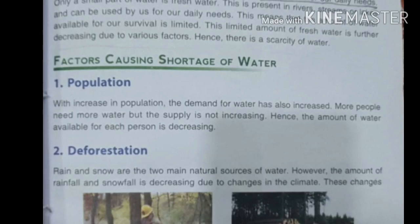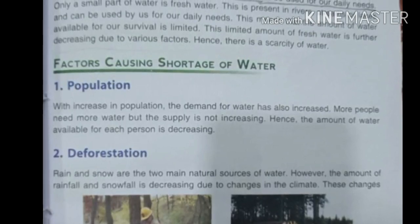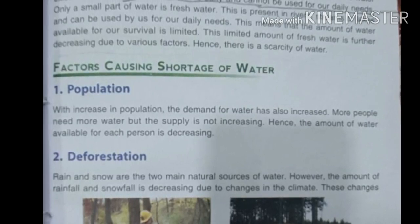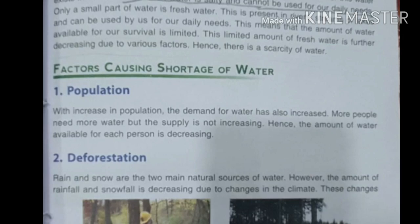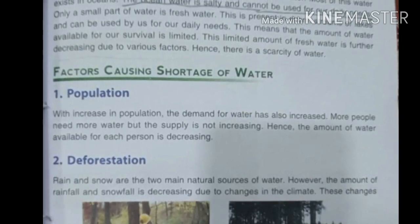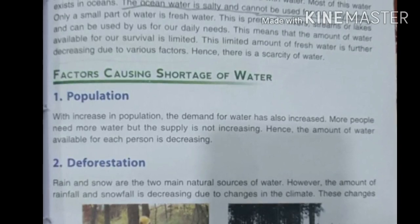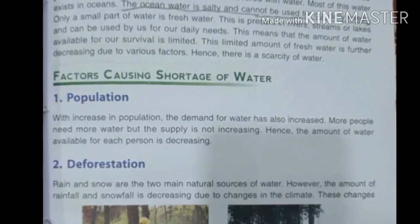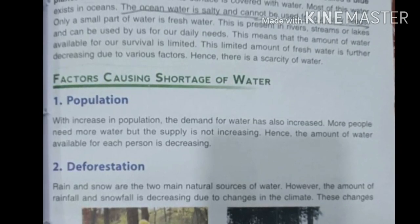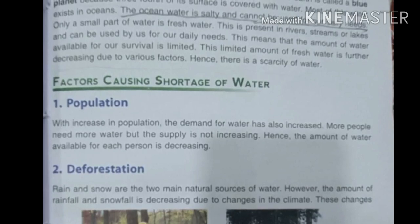Each and every person roughly needs around 700 to 800 liters of water every day. So if our population is increasing day by day and we multiply that by 700 liters, the demand also increases. But river water or lake water is not increasing at the same speed, so there is scarcity.